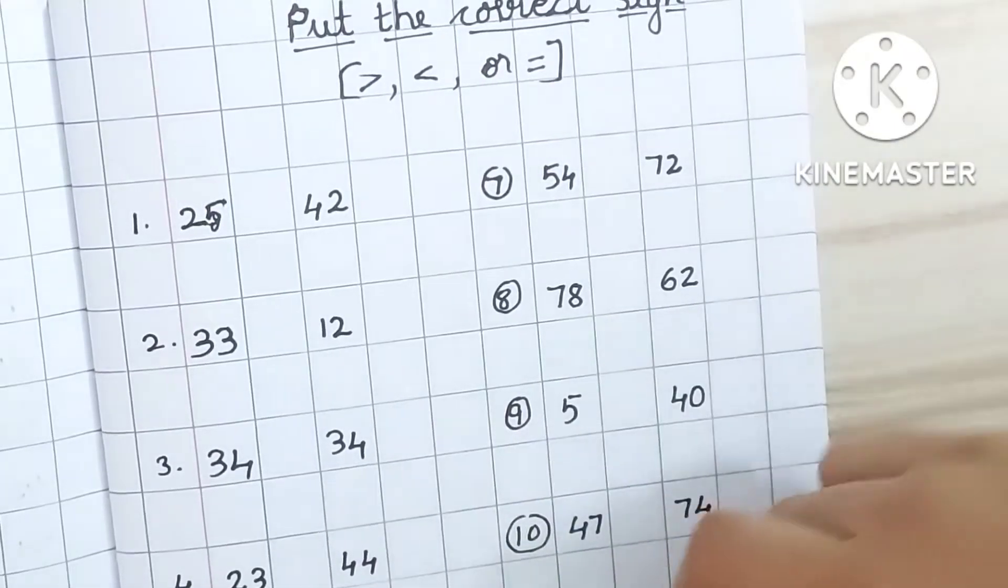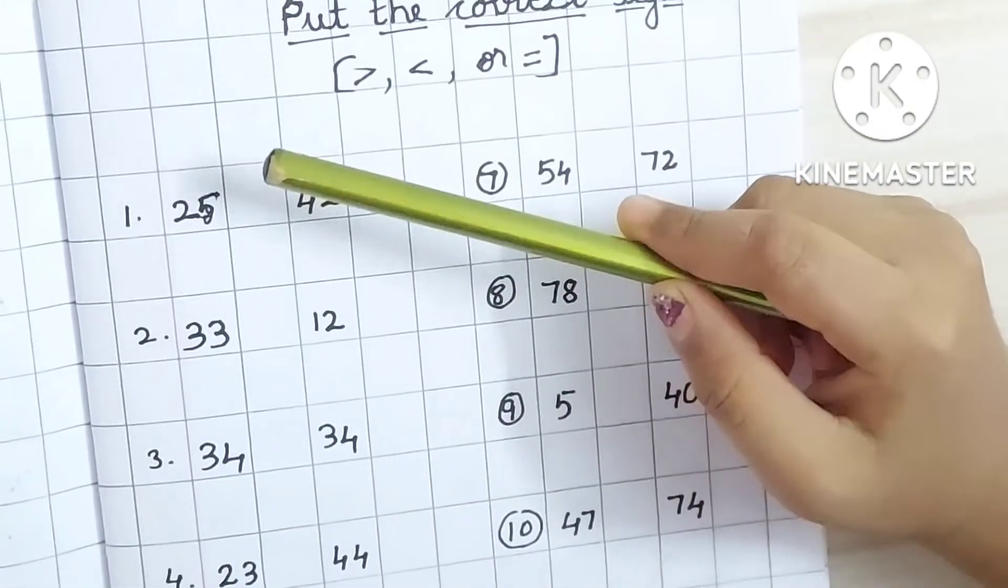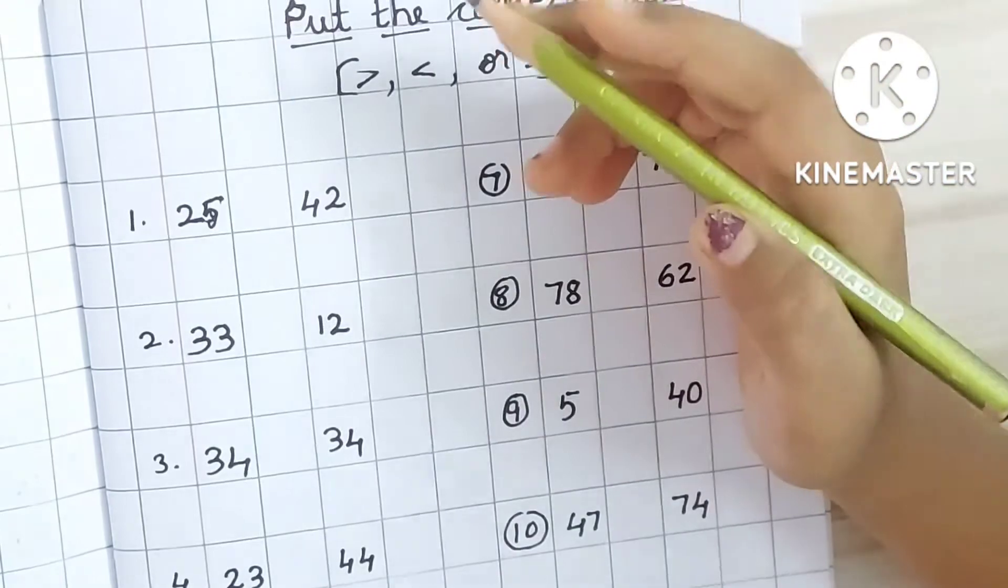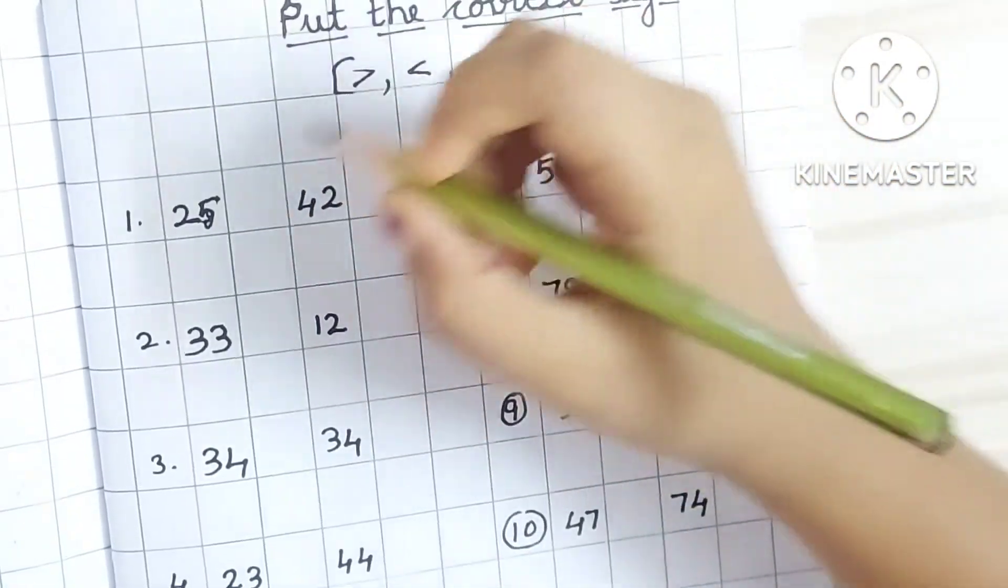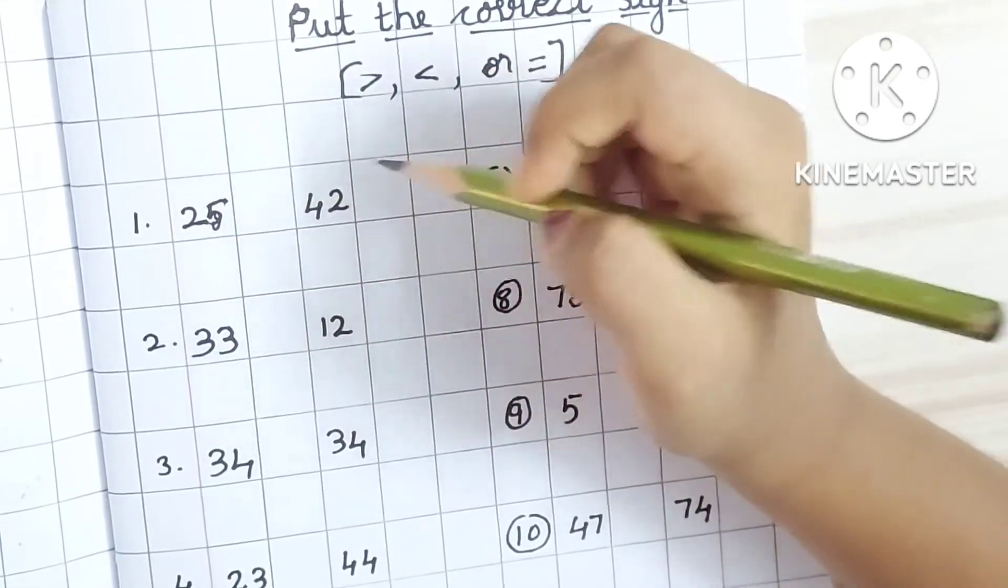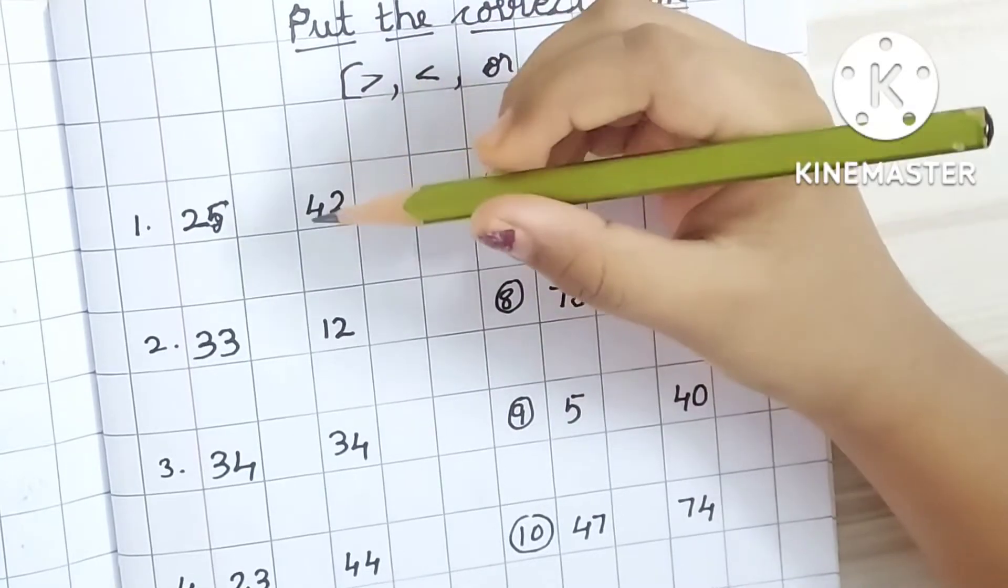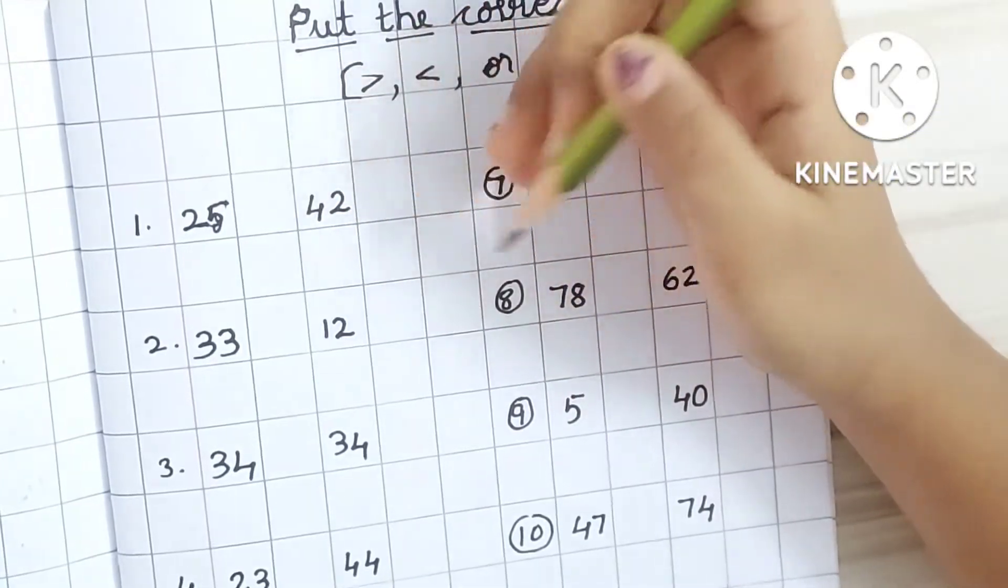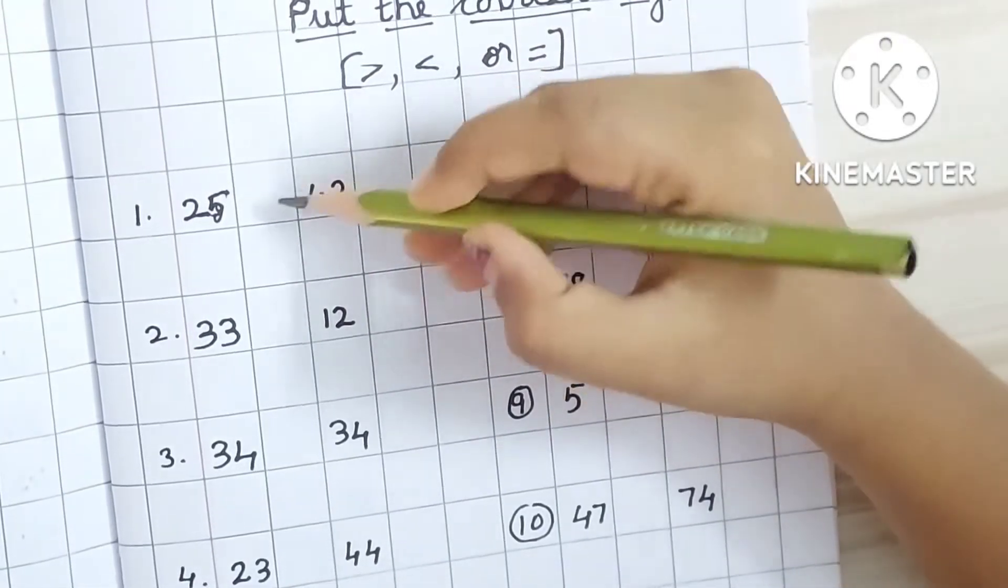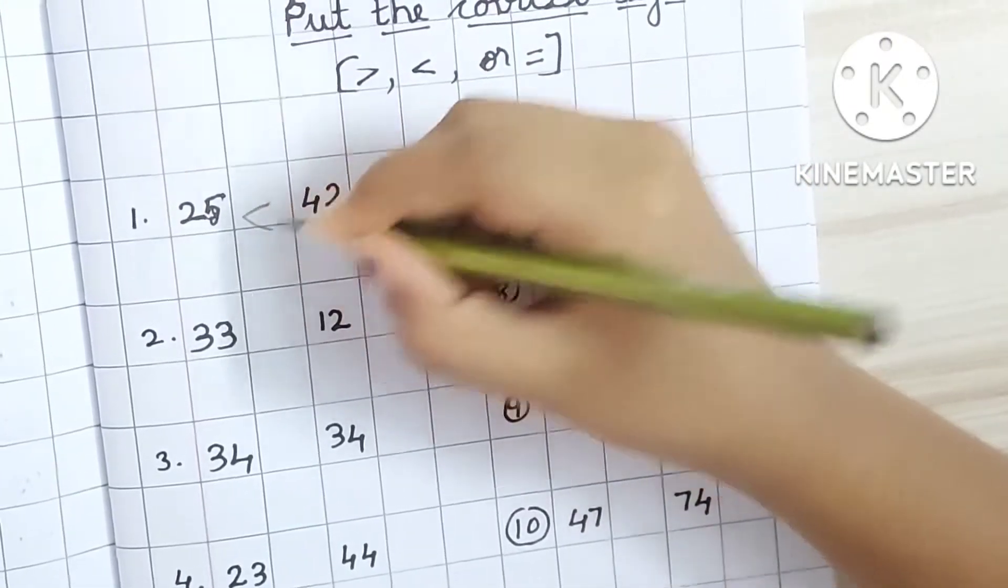So, start. Twenty-five, forty-two. Twenty-five, greater, crocodile mouth open. So, greater means bigger number. Twenty-five, forty-two. Yes, good.